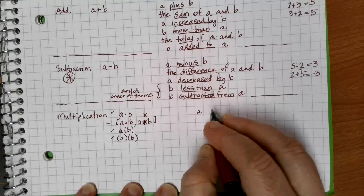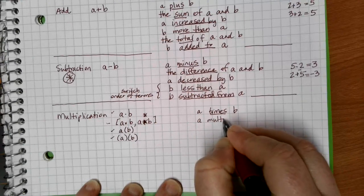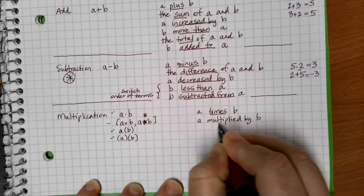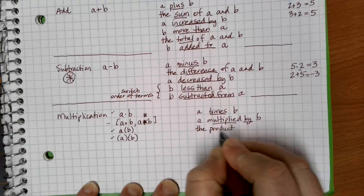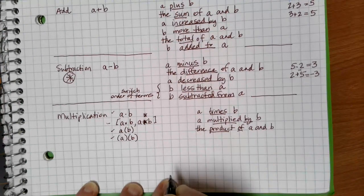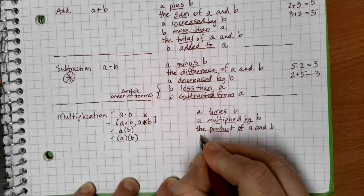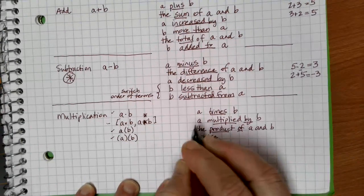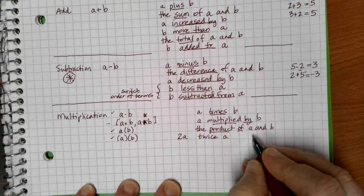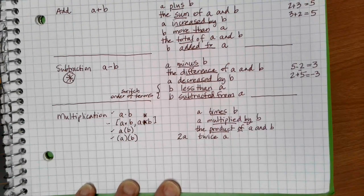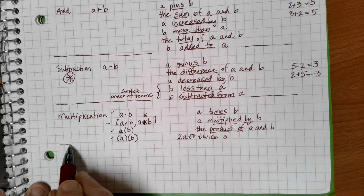Words that imply multiplication include: times, multiplied by, and product of. Some words indicate a specific multiplication factor: twice means two times a number, and triple means three times a number. All of these signal that a multiplication process is involved.